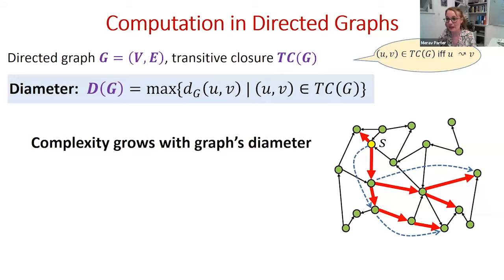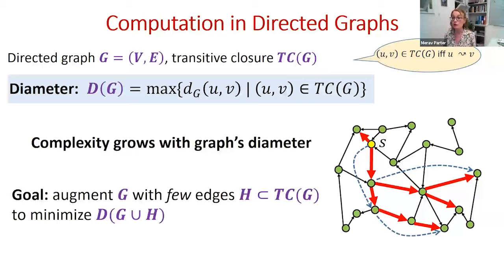Why should we care about the diameter? It turns out that if we consider computation in non-sequential settings, like in the parallel, dynamic, or distributed settings, the complexity of the computation depends on the diameter of the graph. For example, if we wish to compute single source reachability, the depth of the computation depends on the length of the shortest path from the source S. So our goal is to take the graph G and augment it with few edges from the transitive closure in order to minimize the diameter of this augmented graph.